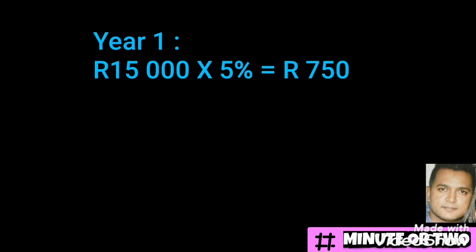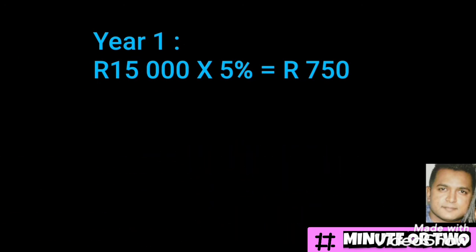Maths learners usually use a formula for a question like this, but we advise you use the year-by-year approach. This gives you an opportunity to gain marks should you make a mistake along your calculations. Speak to your teacher and see what's best, but we suggest using the year-by-year approach, which is what I'm going to be teaching you now. All we are doing is finding five percent for each year.